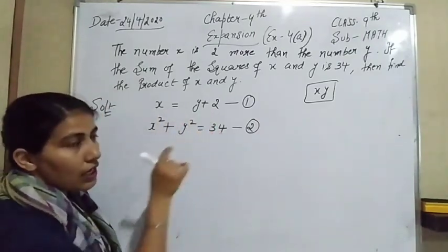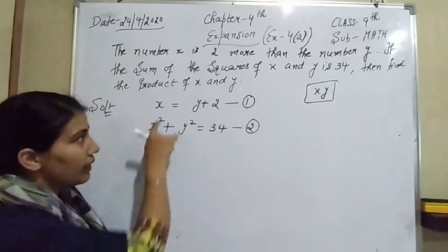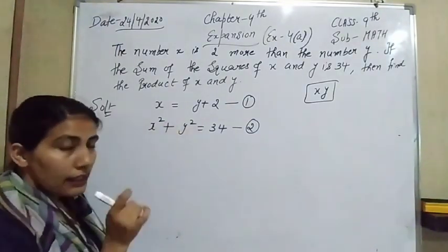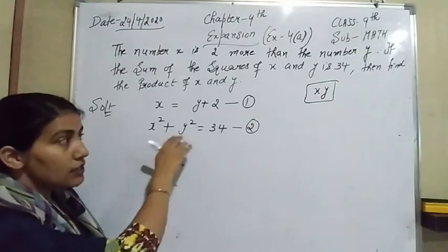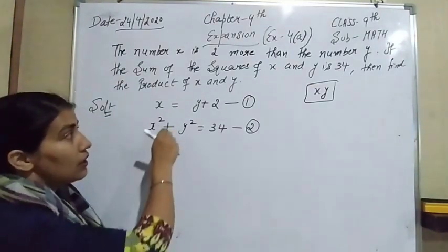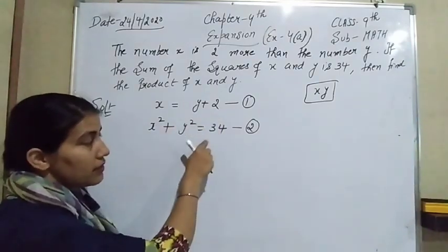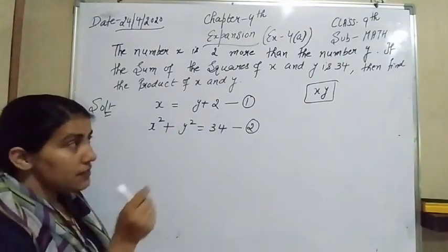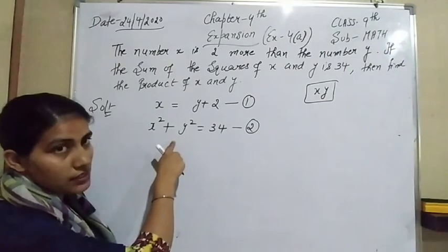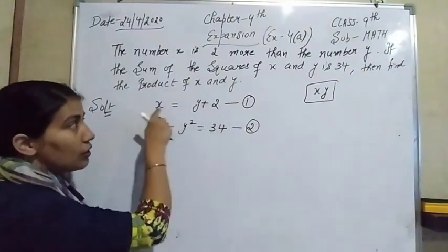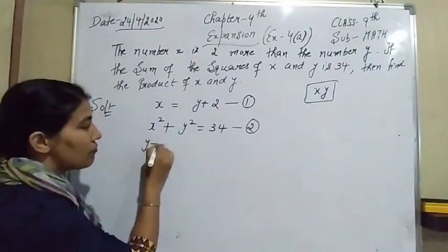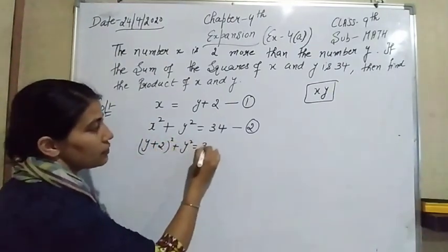Now, the first equation is linear and the second is quadratic. When one equation is linear and the other is quadratic, we solve by substitution. Put the value of x equals y plus 2 into the second equation: y plus 2 whole square plus y square equals 34. Expanding: y square plus 4 plus 4y plus y square equals 34.